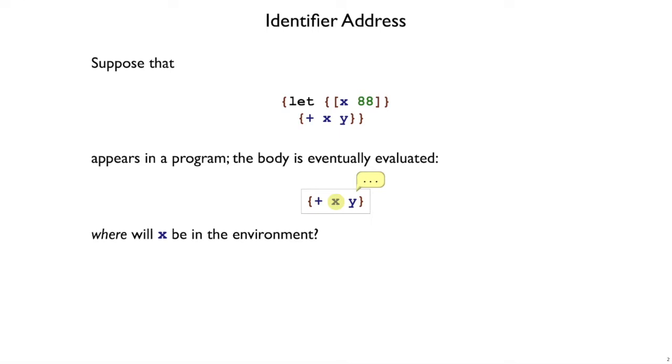It's going to resolve x by doing a lookup in the environment, but where will x be in the environment? Of course, the answer is that it's wherever there's a bind x in the environment, but we know more than that. Because this plus expression happens in the body of this let, we know that x will have just been bound to 88.